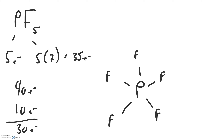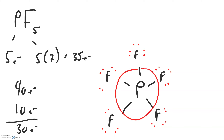We're going to fill the octet rule of all the surrounding atoms and put any extras around the center. We'll put six around each fluorine so that each fluorine has eight. Finally, the remaining electrons go around the phosphorus — in this case the phosphorus has ten electrons. This is one of those violations of the octet rule, and this one is perfectly fine.